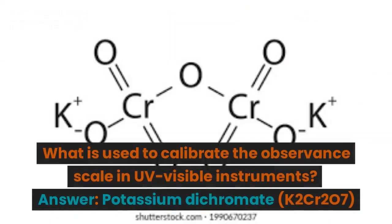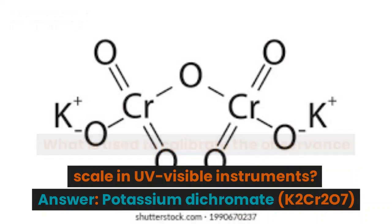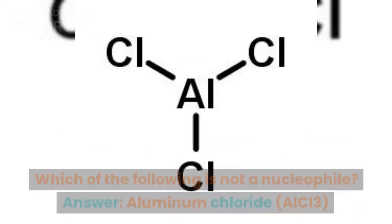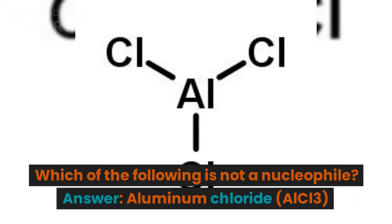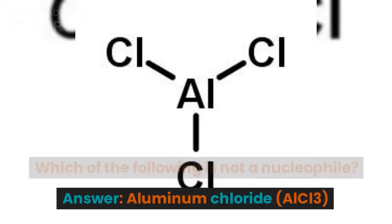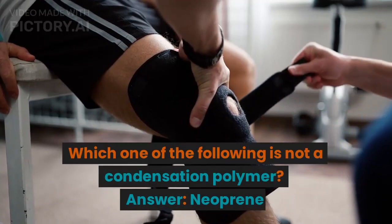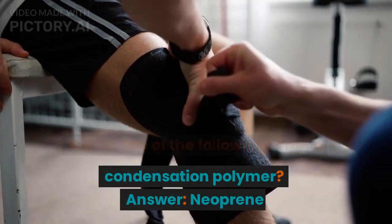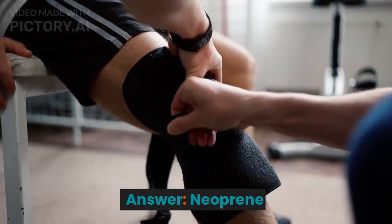What is used to calibrate the absorbance scale in UV-visible instruments? Answer: potassium dichromate. Which of the following is not a nucleophile? Answer: aluminium chloride. Which one of the following is not a condensation polymer? Answer: neoprene.